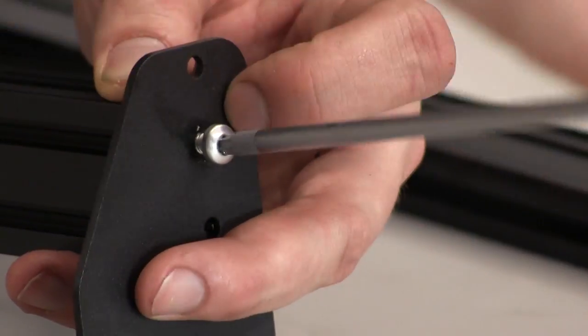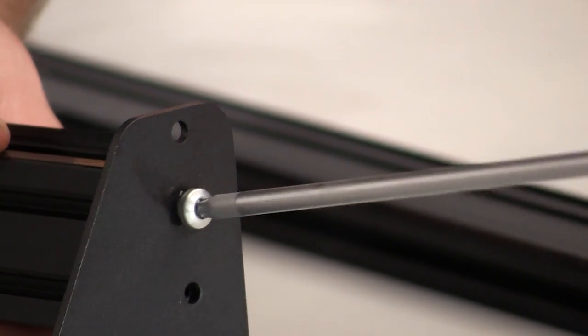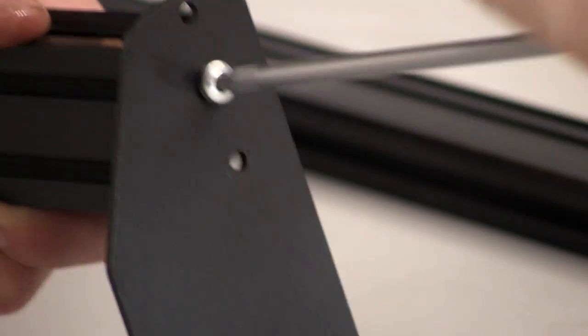Again, you can leave the first self-tapping screw a little loose. This makes it easier to align the hole of the maker slide with the next hole of the end plate.